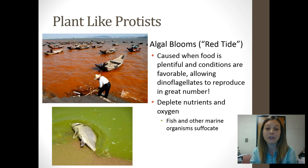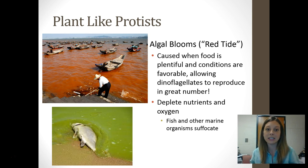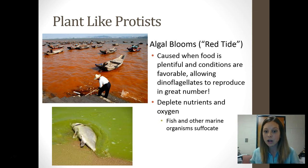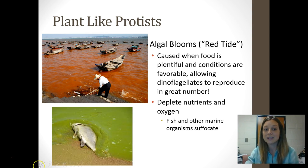We also talked about, when discussing the phosphorus cycle, how when conditions are really good in water it causes algae to explode in number. But the problem is the algae then deplete the nutrients and oxygen in the water, which causes fish and other marine organisms to suffocate and die. We call that an algal bloom. When it is red algae having an algal bloom, you've probably heard it called the red tide.